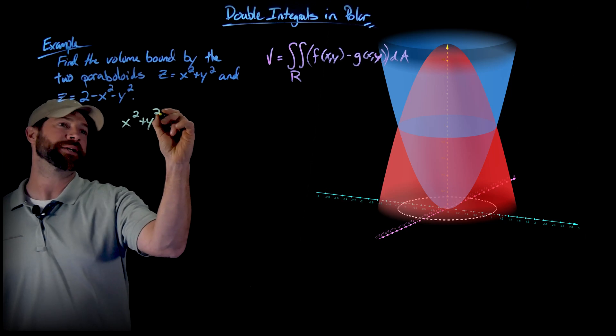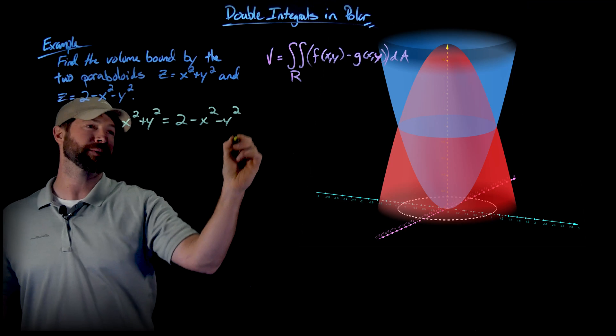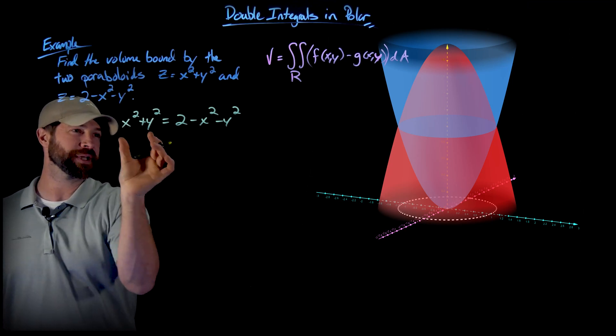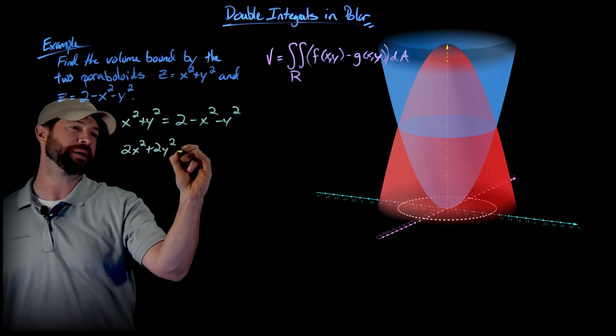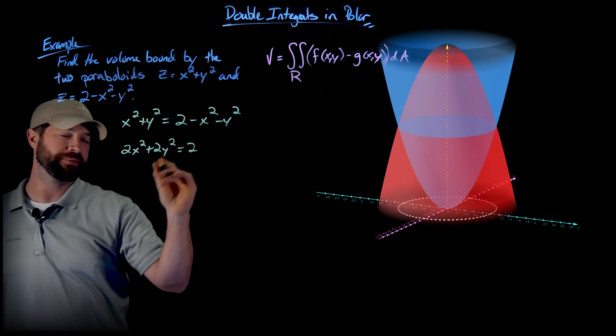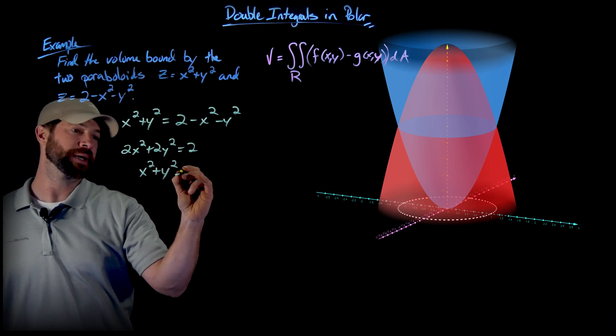So x squared plus y squared equals 2 minus x squared minus y squared. Just going to add over these terms, what I'll get is 2x squared plus 2y squared equals 2, and divide everything by 2. What I get is x squared plus y squared equals 1.